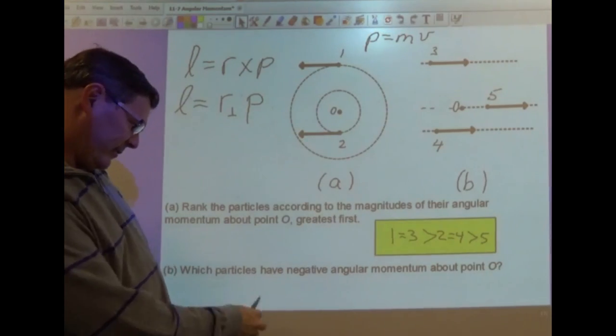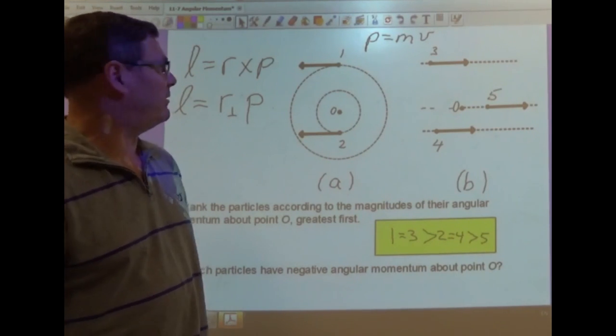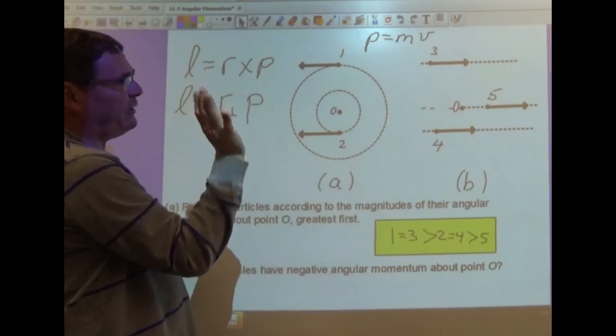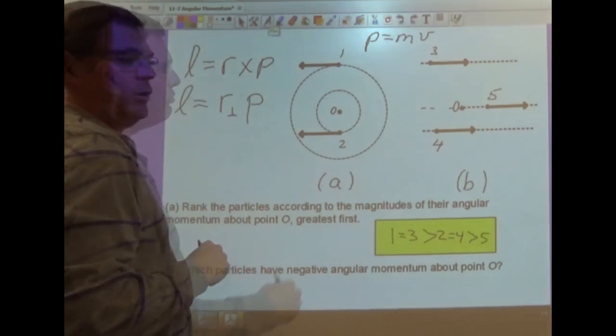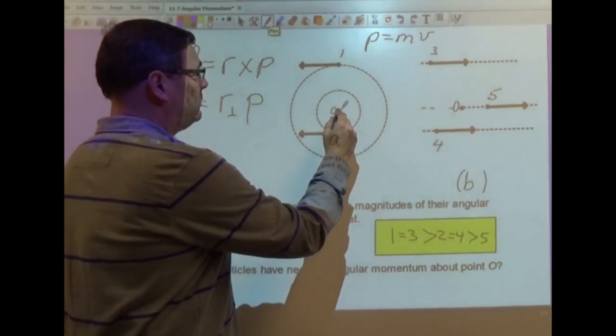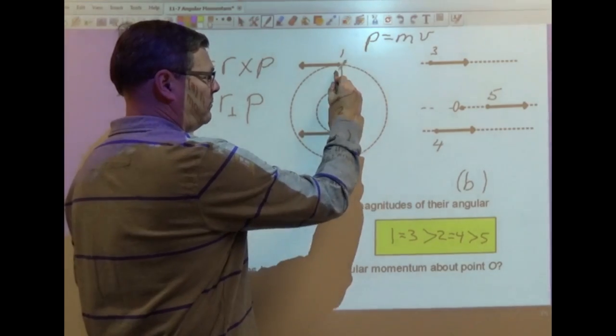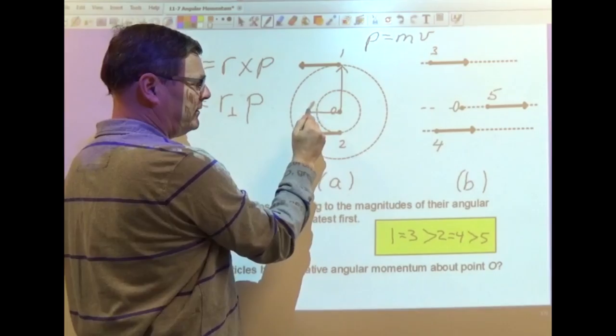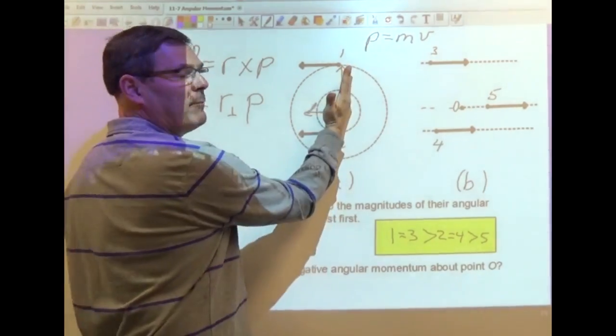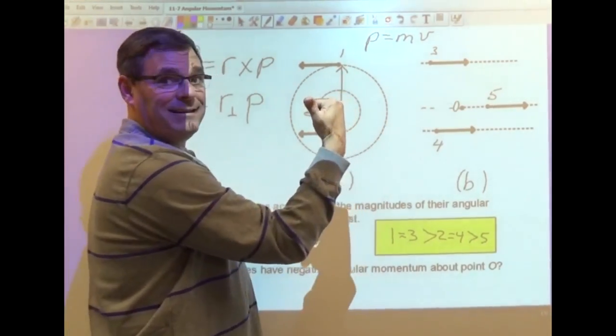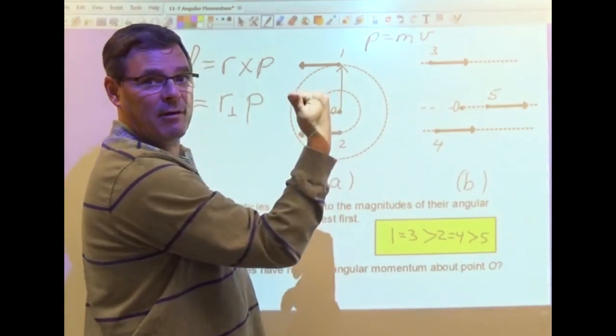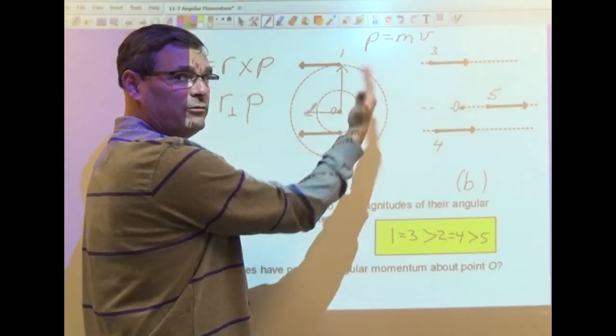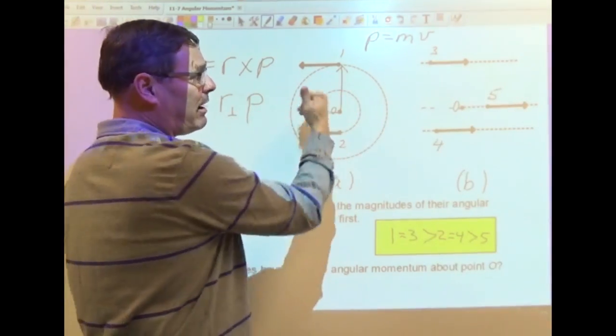Next they ask us, which particles have negative angular momentum? Remember, if we draw the vectors tail to tail, we sweep our right hand from R to P. So for number 1, there's my R vector, and I move my P vector so that it's tail to tail, and I sweep my right hand from R to P, and I see using the right hand rule that my thumb is pointing out of the page. In other words, this is like a counterclockwise movement of my hand, so that's the positive direction.